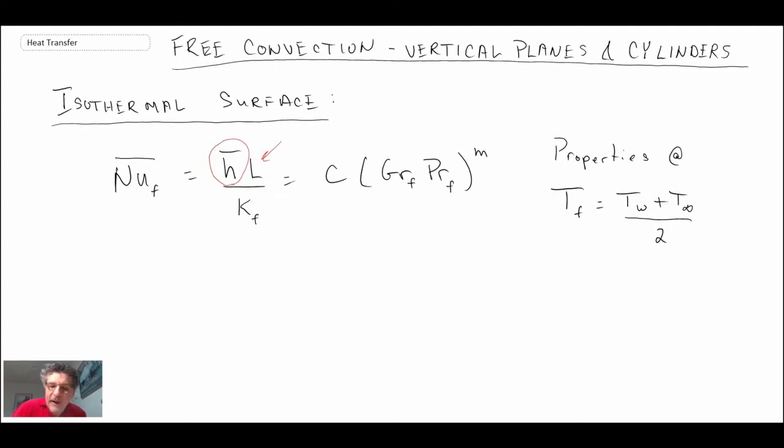Typically what we have here in this part of the equation is the Grashof number times the Prandtl number. That combination, if you recall from the last segment, could be clumped into what we call the Rayleigh number. Typically what we have here is this coefficient m in the equation as well, and we have this value of C. I'll talk about that shortly, but let's begin with the coefficient or the power m that is in this equation.